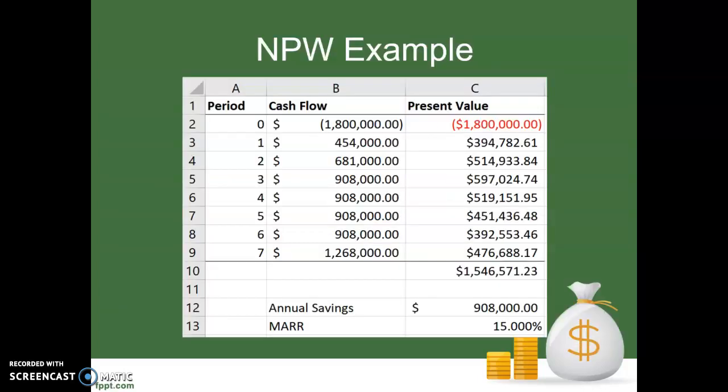That brings me to the end of this chapter. We've looked at three different methods of screening a project — in other words, looking at a project to determine if it's one our company wants to do. We've looked at the payback method, the discounted payback method, and the net present worth method of analysis. If you have any questions, be sure to let me know in class or post questions to the discussion board, and good luck with the homework.